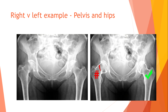Example: pelvis and hips. When a patient complains of pain in the left hip or right hip, you know where you want to look. This is one mistake you should not make when assessing these images.